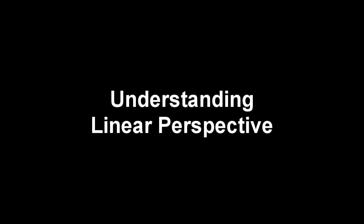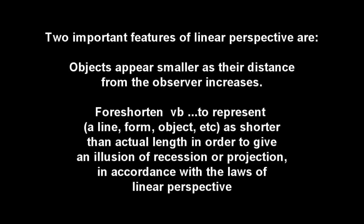In this video we will be explaining linear perspective. There are two kinds of perspective: linear perspective and aerial perspective. The two important features of linear perspective are: objects appear smaller as their distance from the observer increases, and foreshortening — representing a line, form, or object as shorter than actual length in order to give an illusion of recession or projection in accordance with the laws of linear perspective.